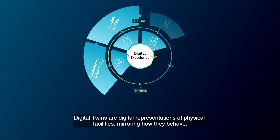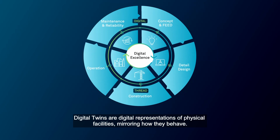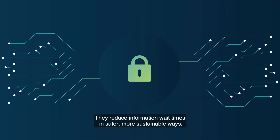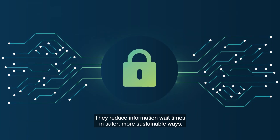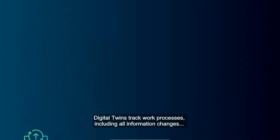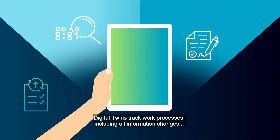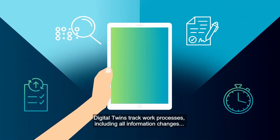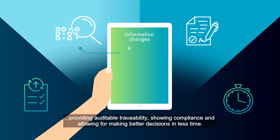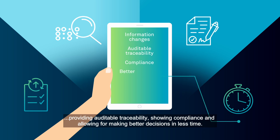Digital Twins are digital representations of physical facilities, mirroring how they behave. They reduce information wait times in safer, more sustainable ways. Digital Twins track work processes including all information changes, providing auditable traceability, showing compliance and allowing for making better decisions in less time.